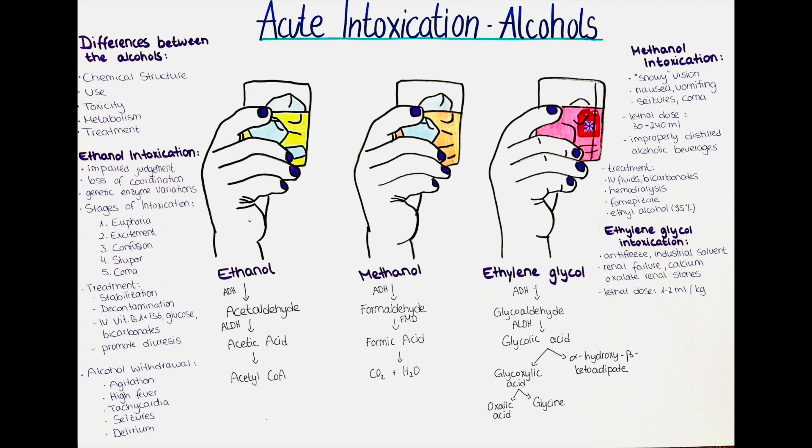First, the chemical structure. Ethanol, also known as ethyl alcohol, has a two-carbon chain with a hydroxyl group attached to one of the carbons. Methanol, also known as methyl alcohol, has a one-carbon chain with a hydroxyl group attached to it. Ethylene glycol has a two-carbon chain with two hydroxyl groups attached to the different carbons.